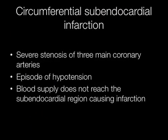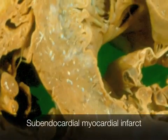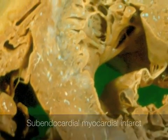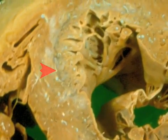Circumferential subendocardial infarction occurs when there is severe stenosis of the three main coronary arteries. When there is an episode of hypotension, the blood supply cannot reach the subendocardial region, causing infarction. The pale area in the subendocardial aspect of the left ventricle here is an example of scarring from a subendocardial myocardial infarct.